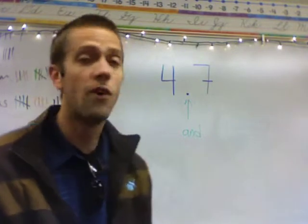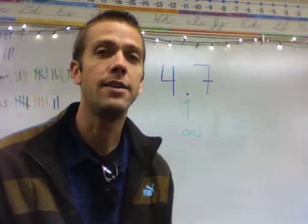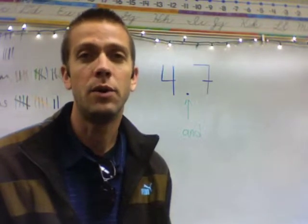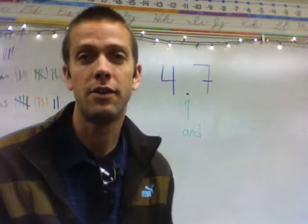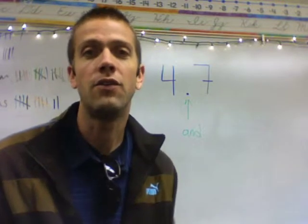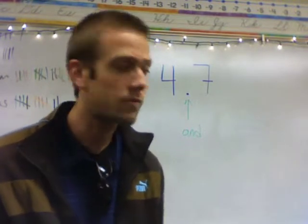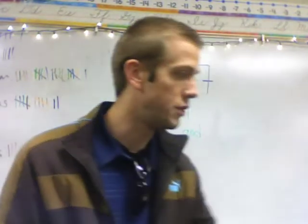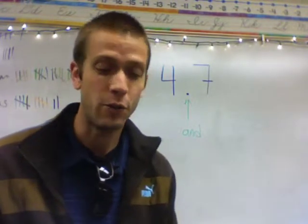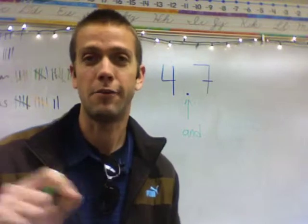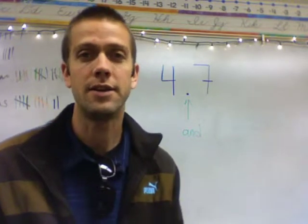So this is 4 wholes — 4 and 7 — and what place is the 7 in? It's in the tenths column. So this number is 'four and seven tenths.' Number 1 on your homework says to use words to describe that number, so you would actually write every letter out for the words 'four and seven tenths.'